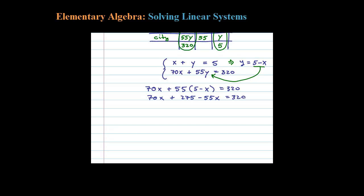Combining like terms, 70 minus 55 is 15X. 15X plus 275 equals 320. Then subtracting 275, 15X equals 45, and then dividing by 15, X equals 3.